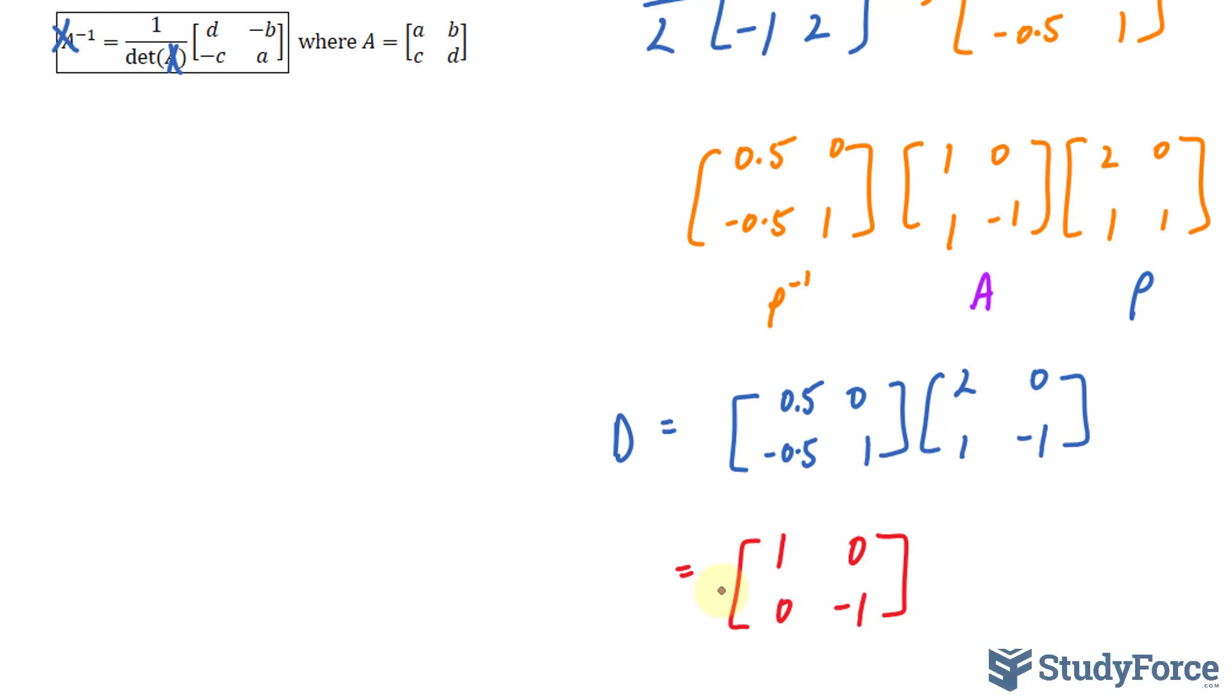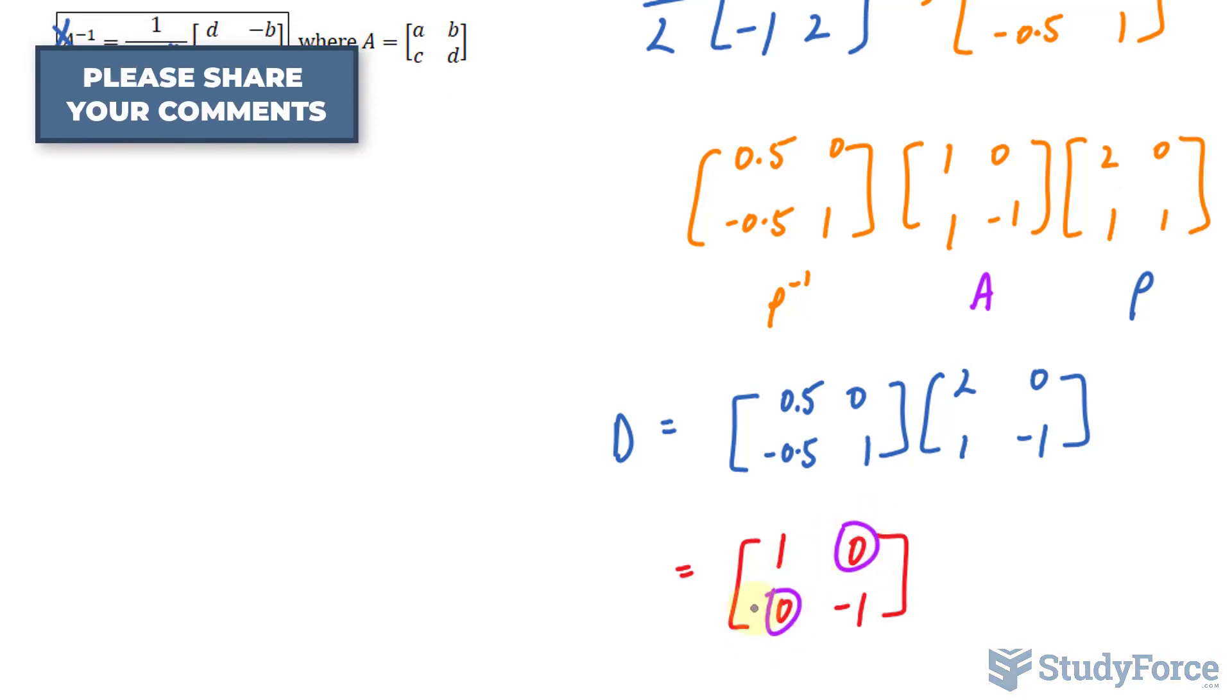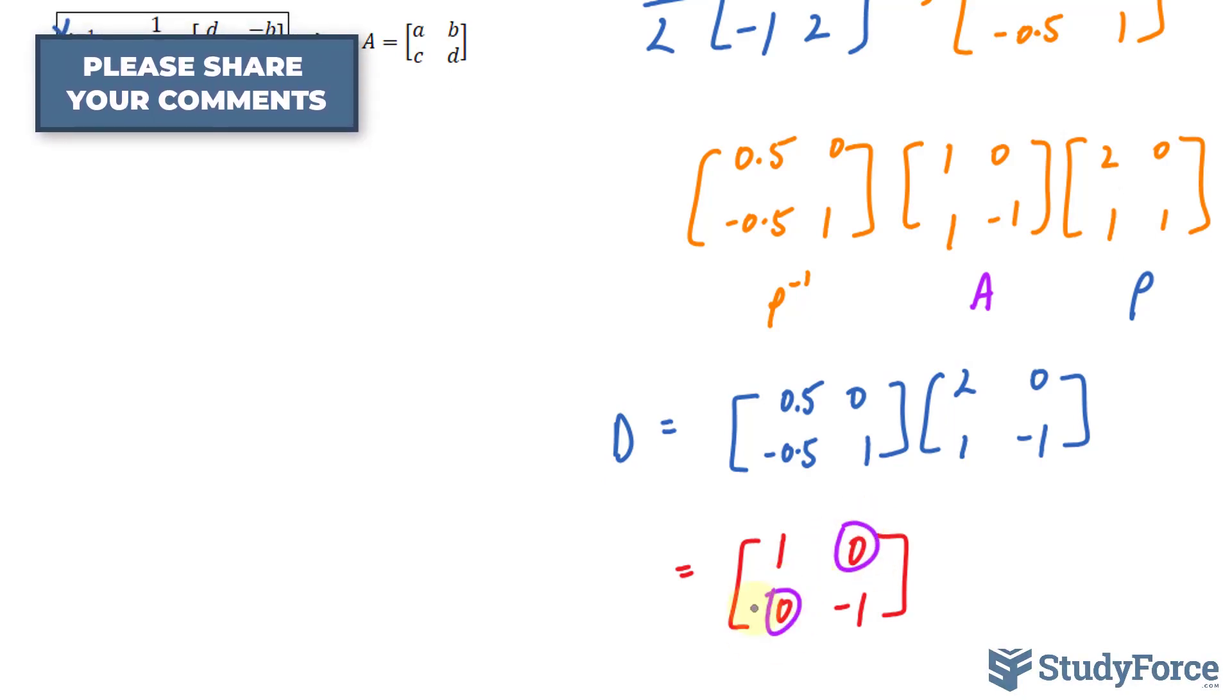This is a diagonal matrix because all of its diagonal entries, this one and this one, are non-zeros. And these two entries happen to be zeros, which is what we look for in a diagonal matrix.